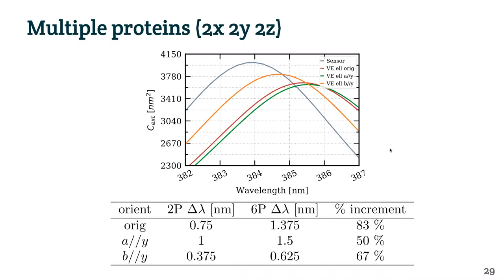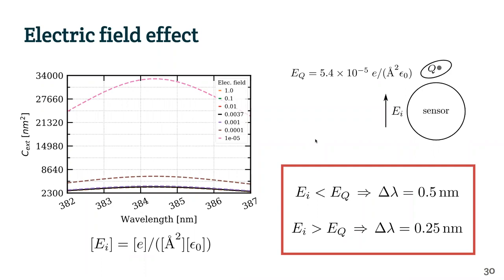The next aspect we explored regarding the modeling was whether the magnitude of the incident electric field had any effect on the LSPR response. We were able to show that when the incoming electric field magnitude was smaller than the magnitude of the electric field generated by a single charge on the protein at the surface of the sensor, then the shift changes from 0.25 to 0.5. So this pink curve not only has higher levels of extinction cross-section, but the shift is farther to the right.